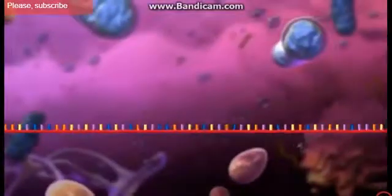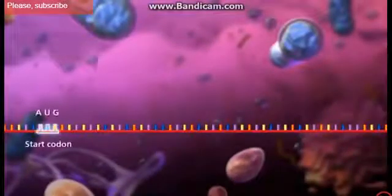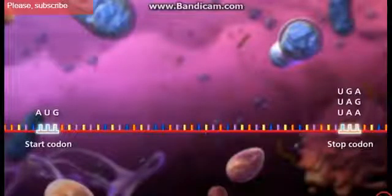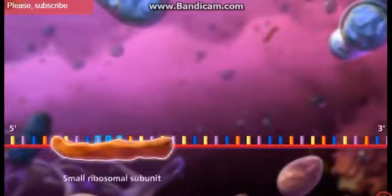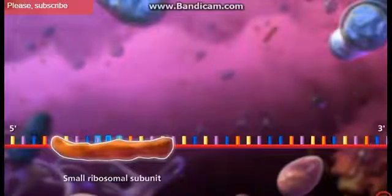There are four special codons, one that codes for start and three that code for stop. Translation begins with the messenger RNA strand binding to the small ribosomal subunit upstream of the start codon.